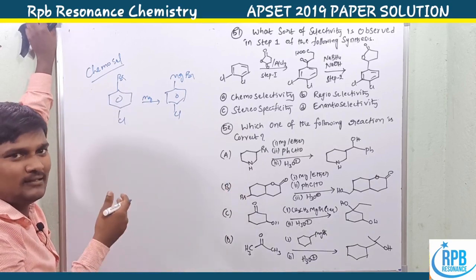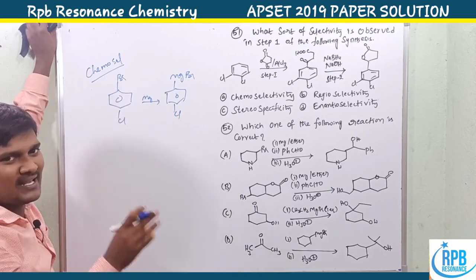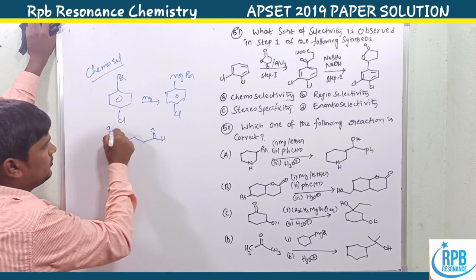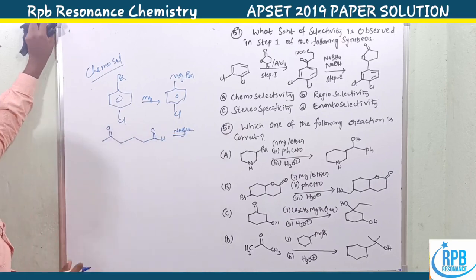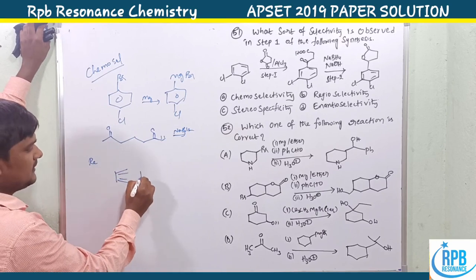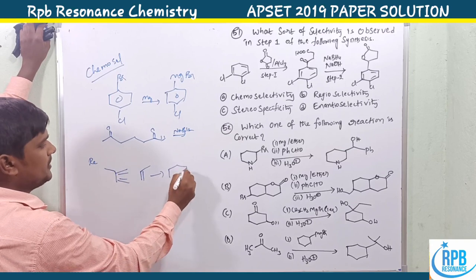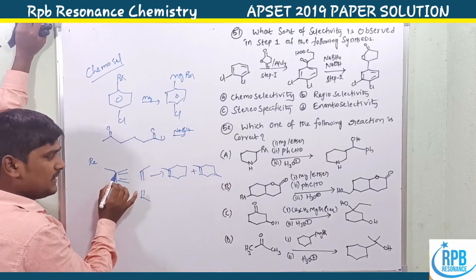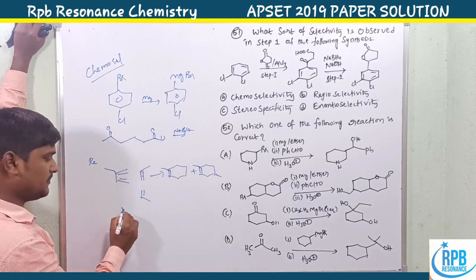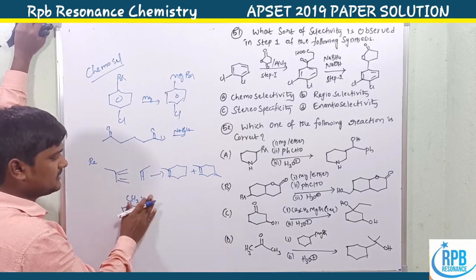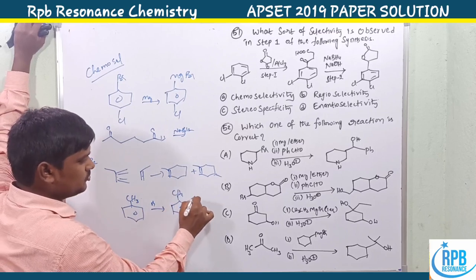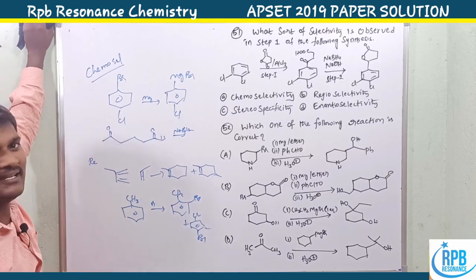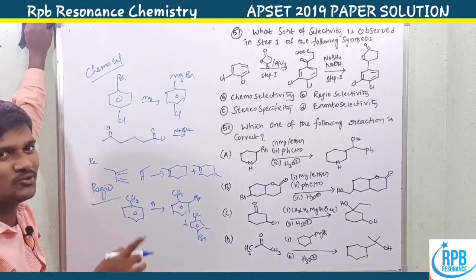For example, if a compound has both aldehyde and ketone, sodium borohydride reduces the aldehyde to give an alcohol — that is chemoselectivity. Regioselectivity: if a reaction can occur at different positions — for example, bromination of toluene can give ortho, meta, or para bromination — and the reaction selectively occurs at one position over the others, that is regioselectivity.